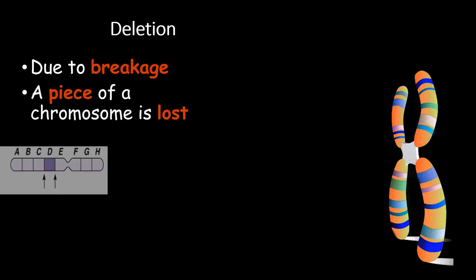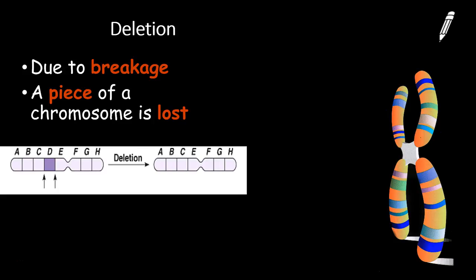So first, let's go over deletion. In deletion, there's going to be a segment of the chromosome that is lost. For example, let's say that this is my chromosome, and each letter represents a single gene. Well, if there's a segment or a gene that is lost completely, then we would call that deletion. If we look at this new chromosome, there is no gene, the letter D.